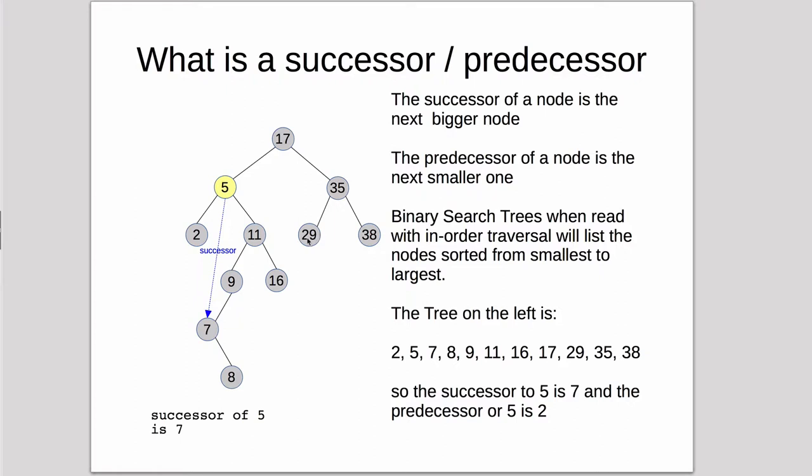So what we're going to see in the book code, he's implemented the general case for finding the successor. Now the predecessor is another type of thing you can find in a tree, just to mention it.